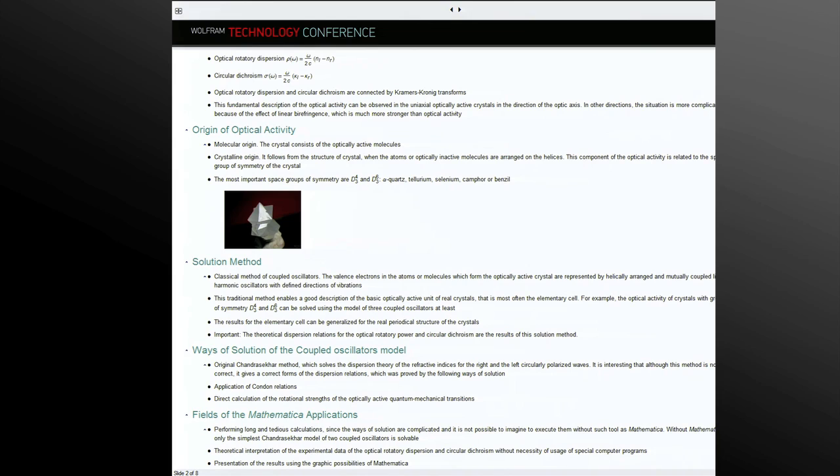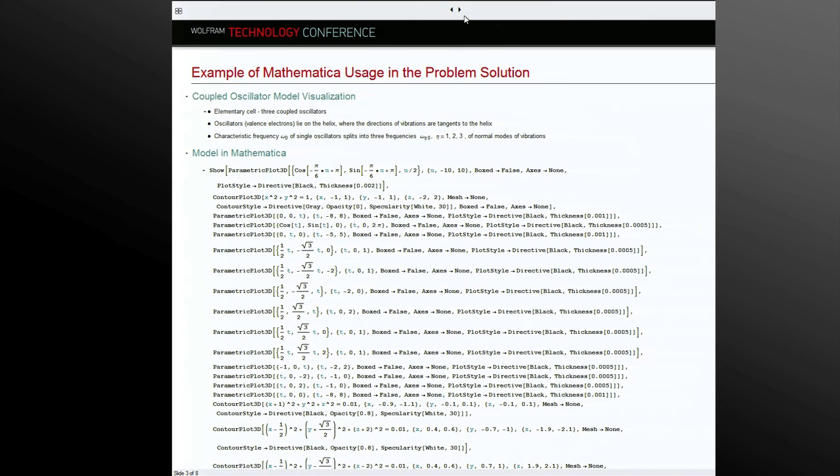First example is the visualization of the coupled oscillators model. We restrict ourselves to groups of symmetry D34 or D36. These crystals contain three coupled oscillators in elementary cell. These directional vibrations are tangential to the helix on which the coupled oscillators lie.